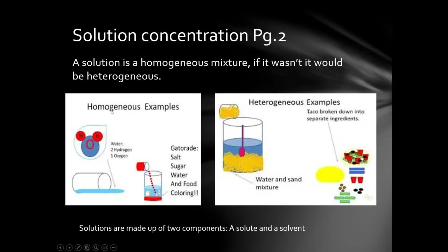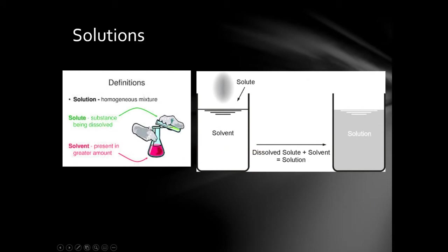Some general stuff on solutions: solution concentrations and definitions. A solution is a homogeneous mixture. If it wasn't homogeneous, it would be heterogeneous. By homogeneous, we mean that when we mix the solute and the solvent together, you cannot really tell by the naked eye that there are multiple things in there. Solutions are made up of two components: solute and solvent. The solvent is usually the liquid in greater proportion, and the solute is the component in the smaller proportion.